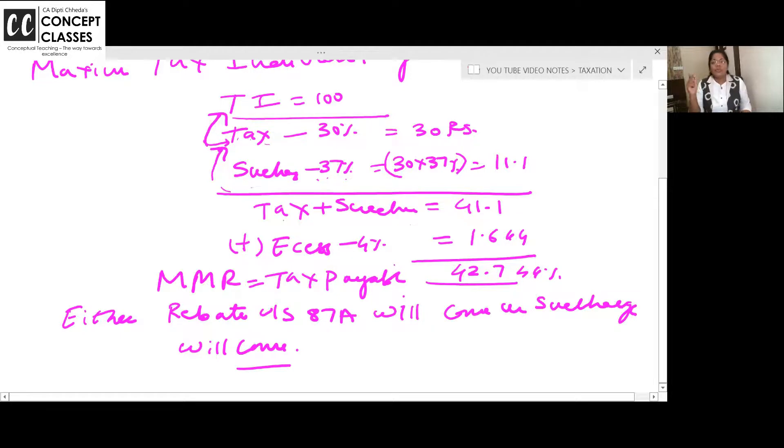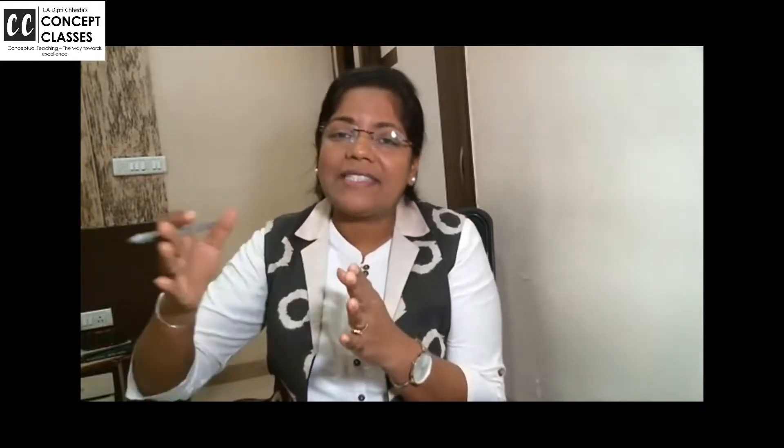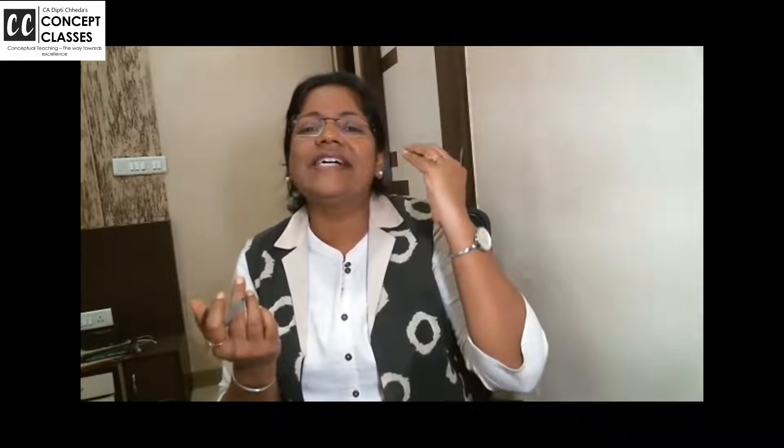If your income exceeds 50 lakhs, then you will have to pay surcharge at 10%. So tell me one thing. If your income is up to 5 lakhs, go for the rebate. If your income, resident individual's income exceeds 50 lakhs, go for the surcharge. Can both come? This is the logical way of learning. Is this clear to all of you?